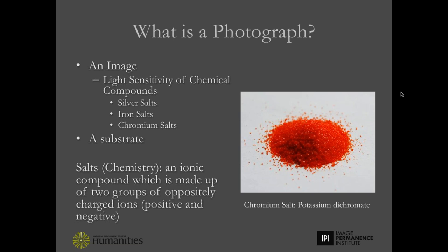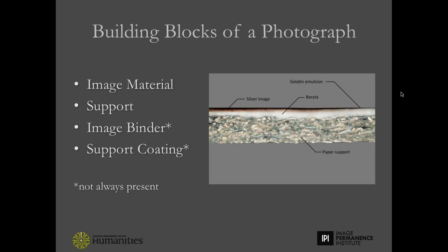In the 19th century, we have three light-sensitive chemical compounds: silver salts, iron salts, and chromium salts. The term 'salt' is a term used in chemistry to describe an ionic compound made up of two oppositely charged ions — a positive and a negative ion.